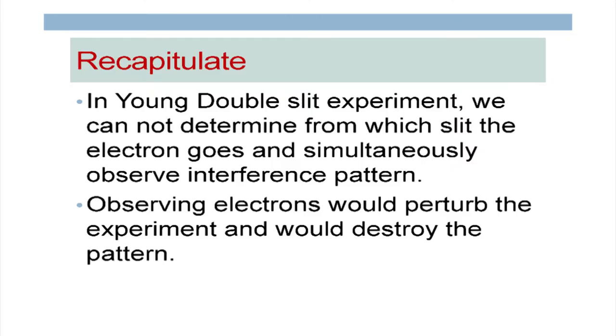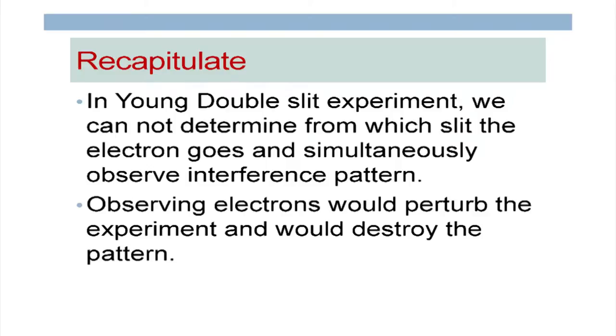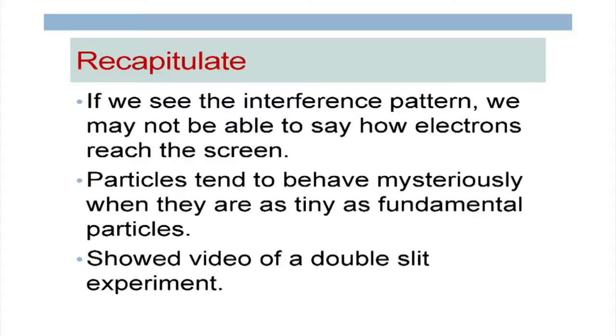Let us start by recapitulating what we did last time. We described the Young's double slit experiment and discussed that we cannot determine from which slit the electron goes and simultaneously observe the interference pattern. If you want to ensure the electron goes through slit 1 or slit 2, you can, but you will not see the interference pattern. Particles behave mysteriously when they are as tiny as fundamental particles.